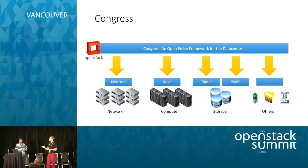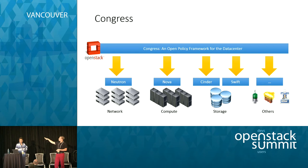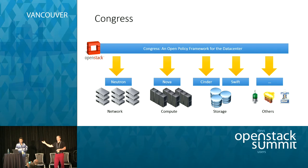Congress is a service just like any other service — Nova, Neutron, or Cinder. Once you've installed it in your data center, you give it two inputs. The first input shows Congress connecting to all the other services in the data center that you want to write policy about — Neutron, Nova, Cinder, and Swift. That list is pretty much random but you can connect any service that you like. That's the first input: the services that you want to write policy about.